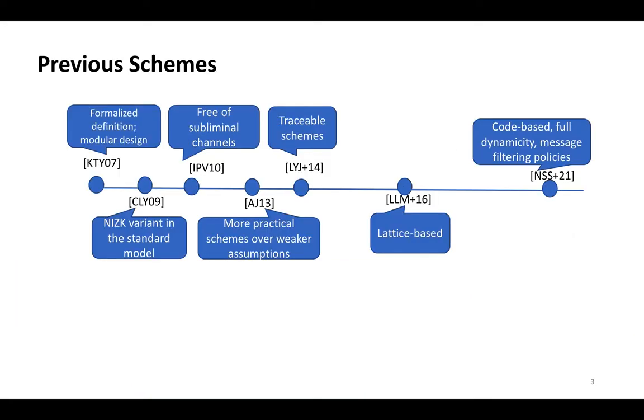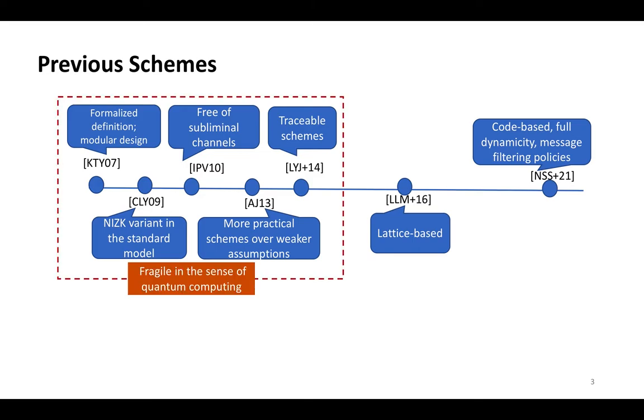Now we review the research line of group encryption. The concept was first introduced by KDWA in 2007, where they provided the formalized definition and a modular design. Later, by reducing the number of rounds, the CL scheme was proposed with non-interactive zero-knowledge in the standard model. To resist subliminal channels, the IPv scheme was proposed, which was free of subliminal channels. After that, a more practical scheme was proposed under weaker assumptions. Similarly to traceable signatures, a traceable scheme was also proposed.